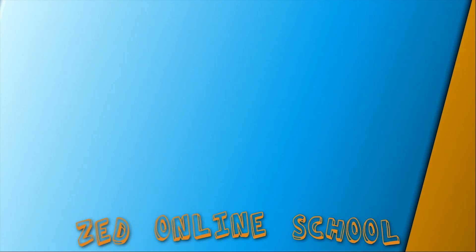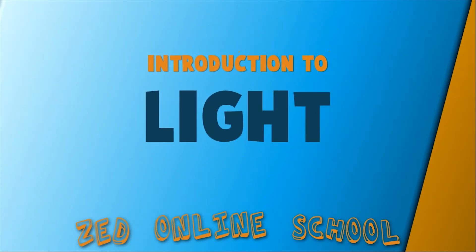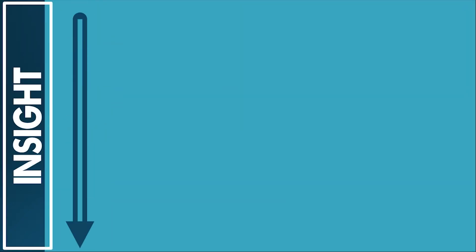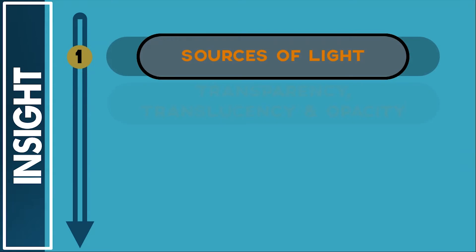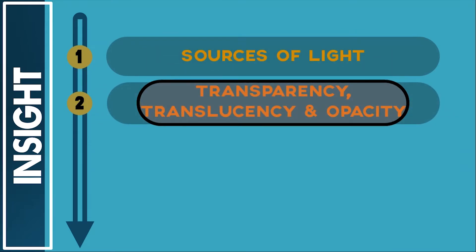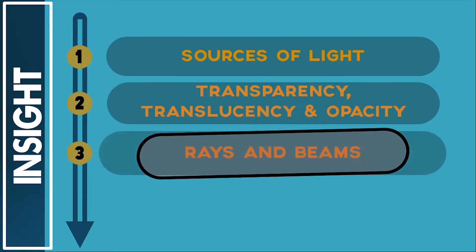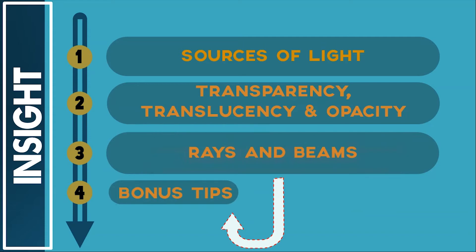This is Zed Online School. In this video, you and I are going to look at an introduction to light. We're going to do this in a systematic way — we're first going to look at sources of light, transparency, translucency and opacity, rays and beams. At the end of this video there are some bonus tips, so make sure you watch till the end to get the maximum value out of it.